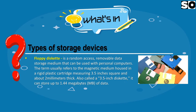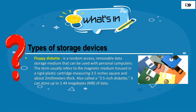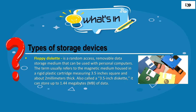Floppy Disk is a Random Access, Removable Data Storage medium that can be used with personal computers. The term usually refers to the magnetic medium housed in a rigid plastic cartridge measuring 3.5 inches square and about 2 mm thick. Also called a 3.5 inch diskette, it can store up to 1.44 MB of data.